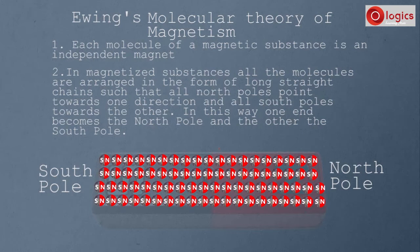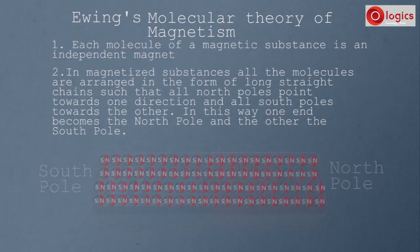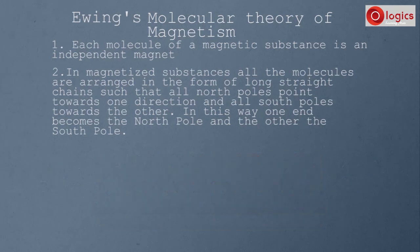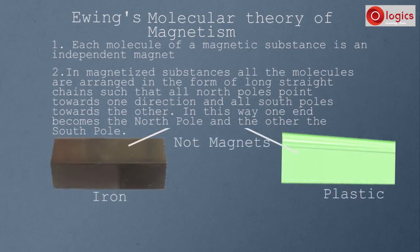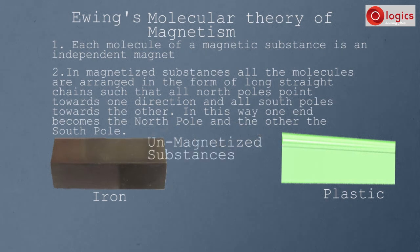Now let's see how molecules are arranged in an unmagnetized substance. Take an iron bar and a piece of plastic — both are not magnets, so both are unmagnetized substances.